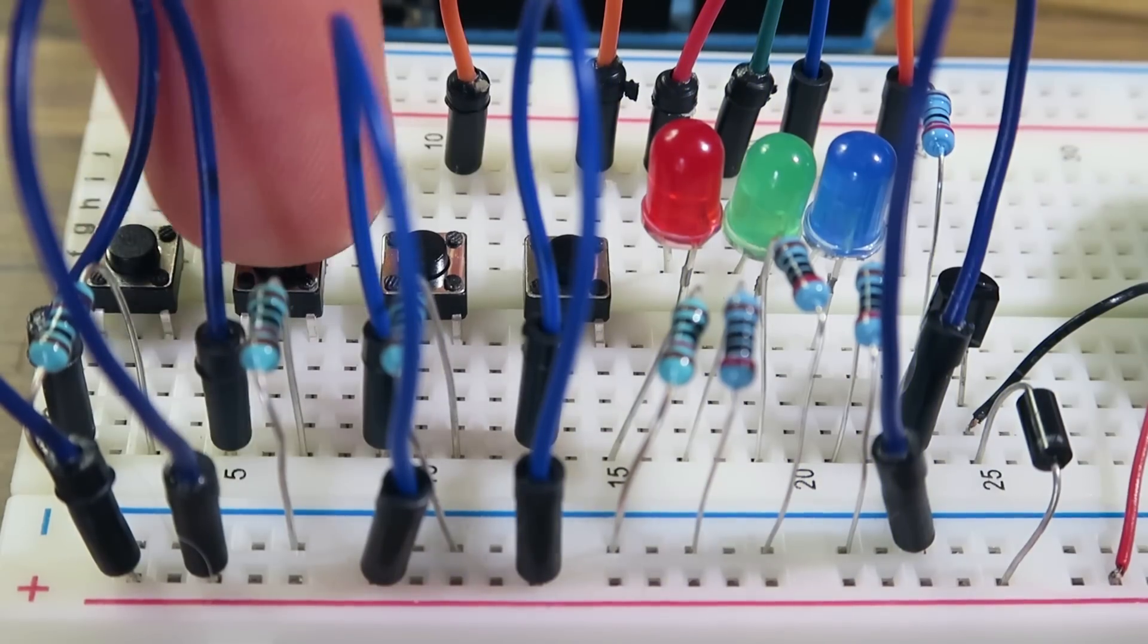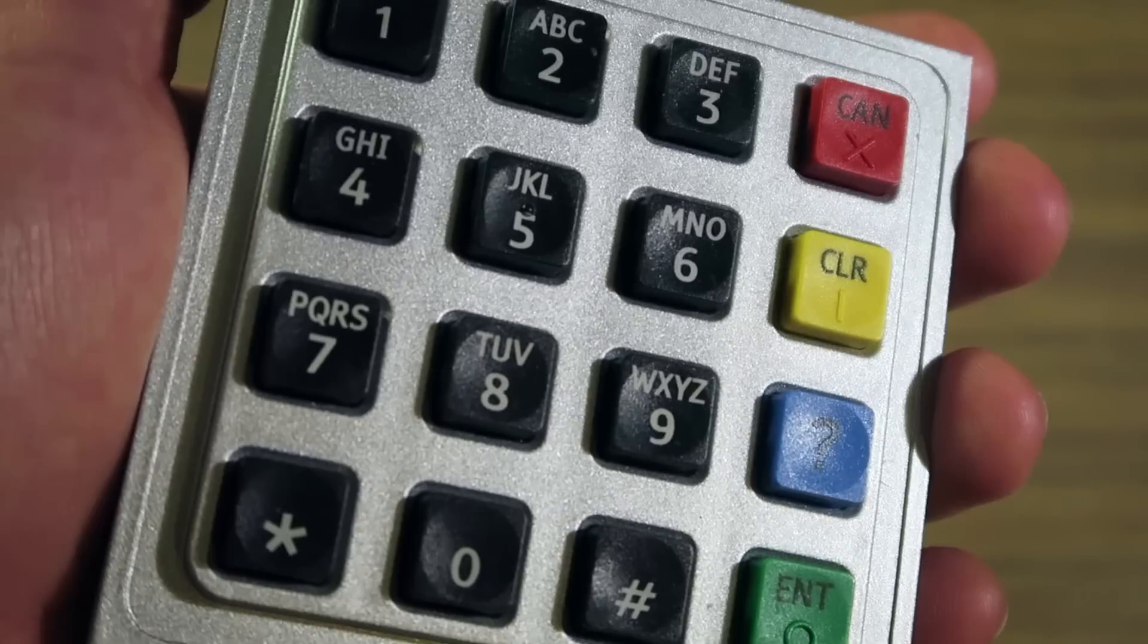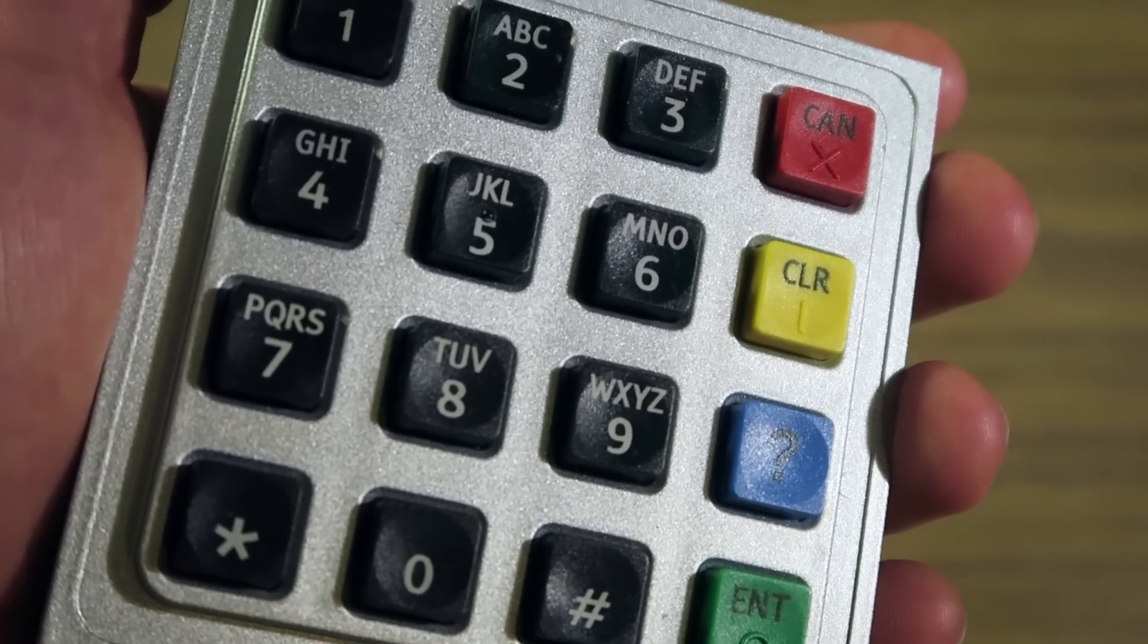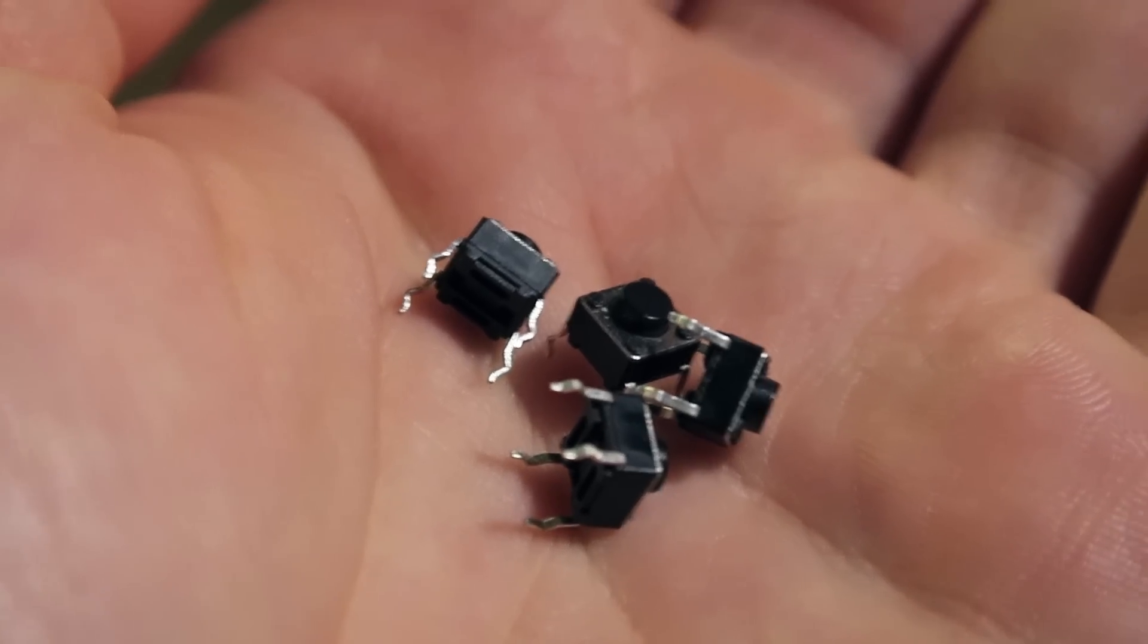To start off, we're going to need a way to enter a combination. I could use a matrix-style keypad, but for the purpose of simplicity, I'm going to use four buttons.